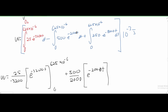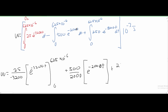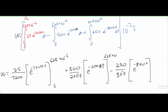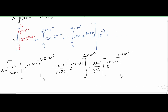Lastly, for the third term, we have 250 over 800, but since we have a negative 800 in the exponent this sign should be negative, giving −250/800 times e^(−800t), evaluated from 0 to 625×10⁻⁶. All of this is multiplied by 10⁻³ joules. It's important we remember that factor, otherwise the answer will be totally wrong.